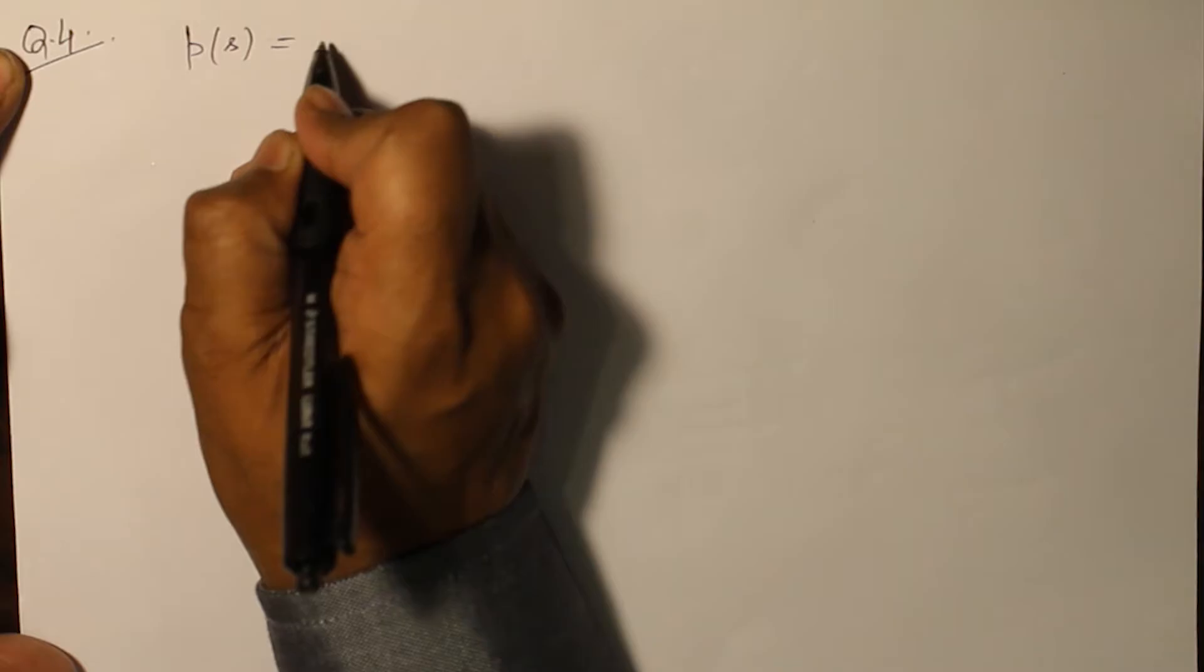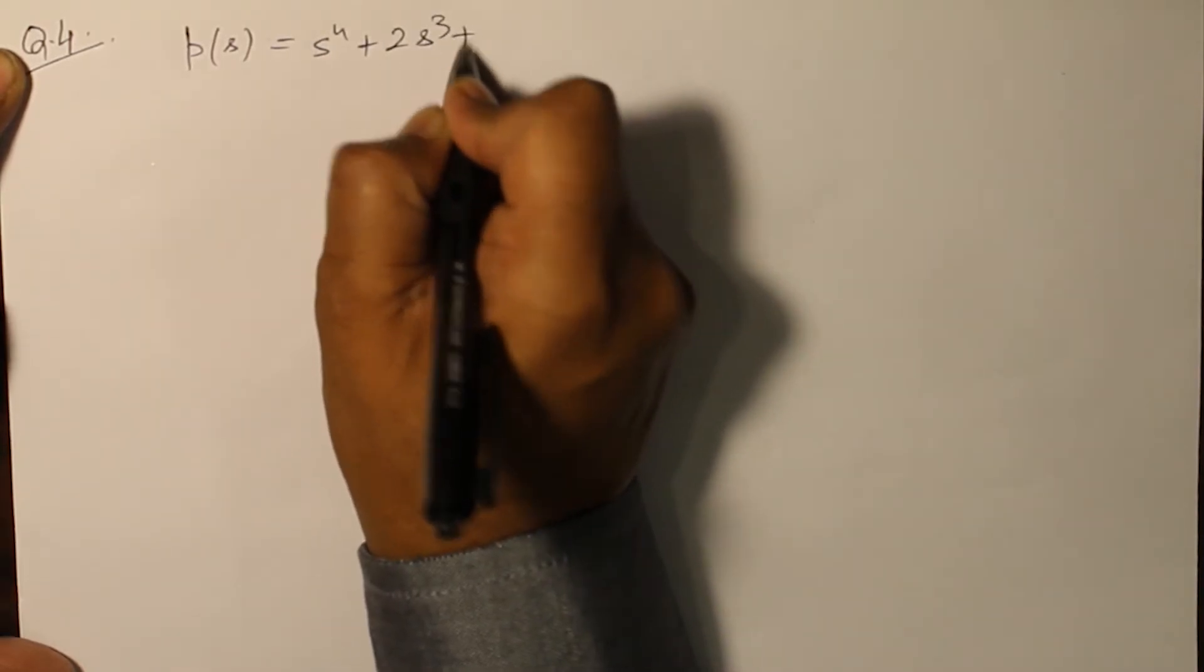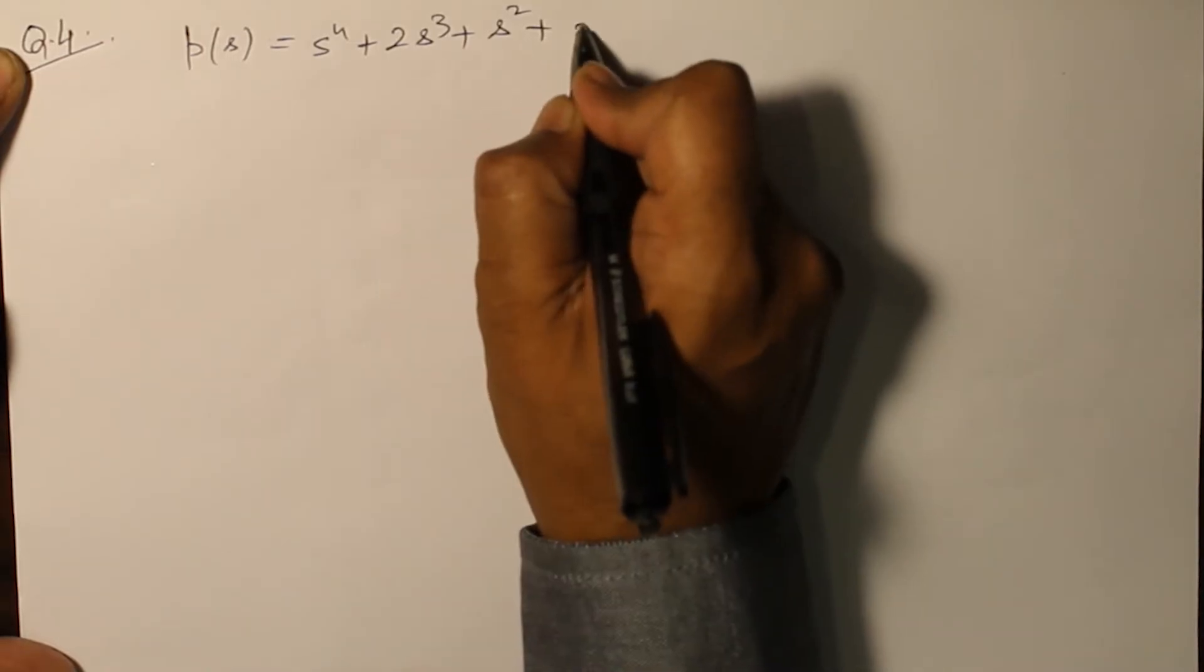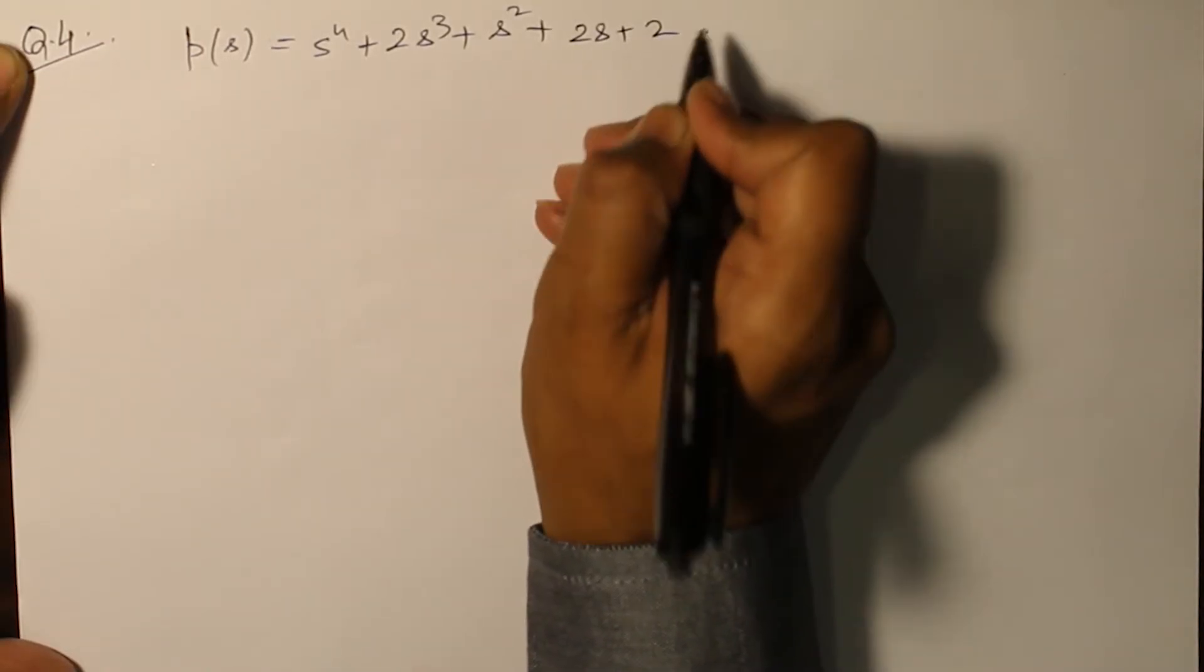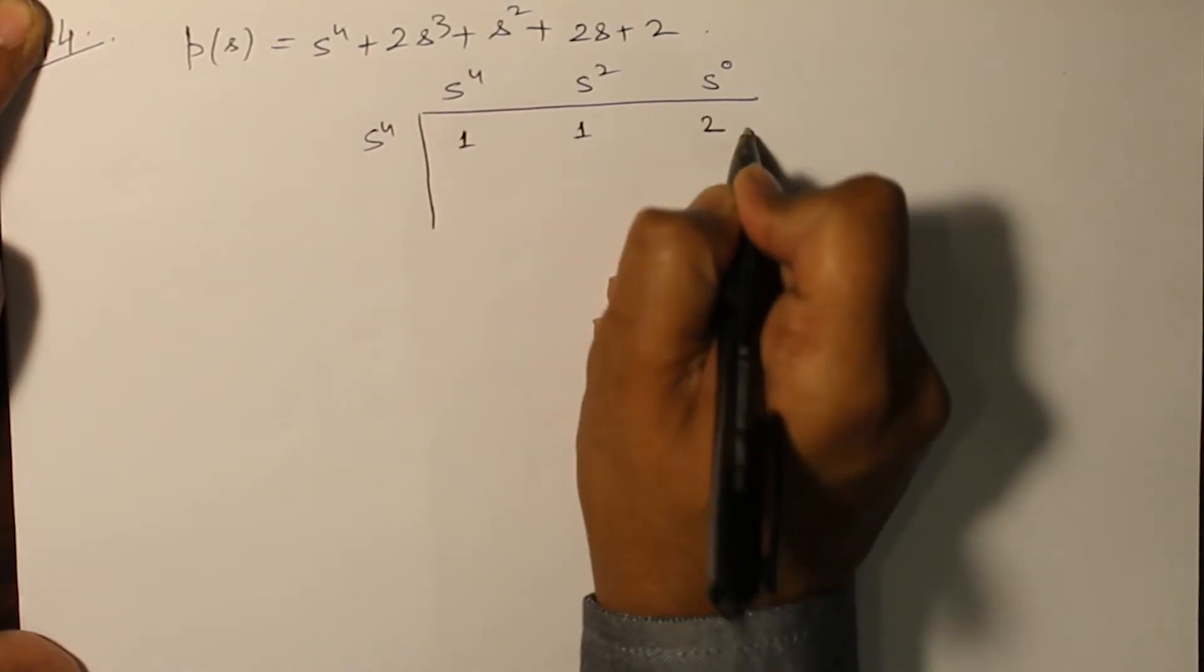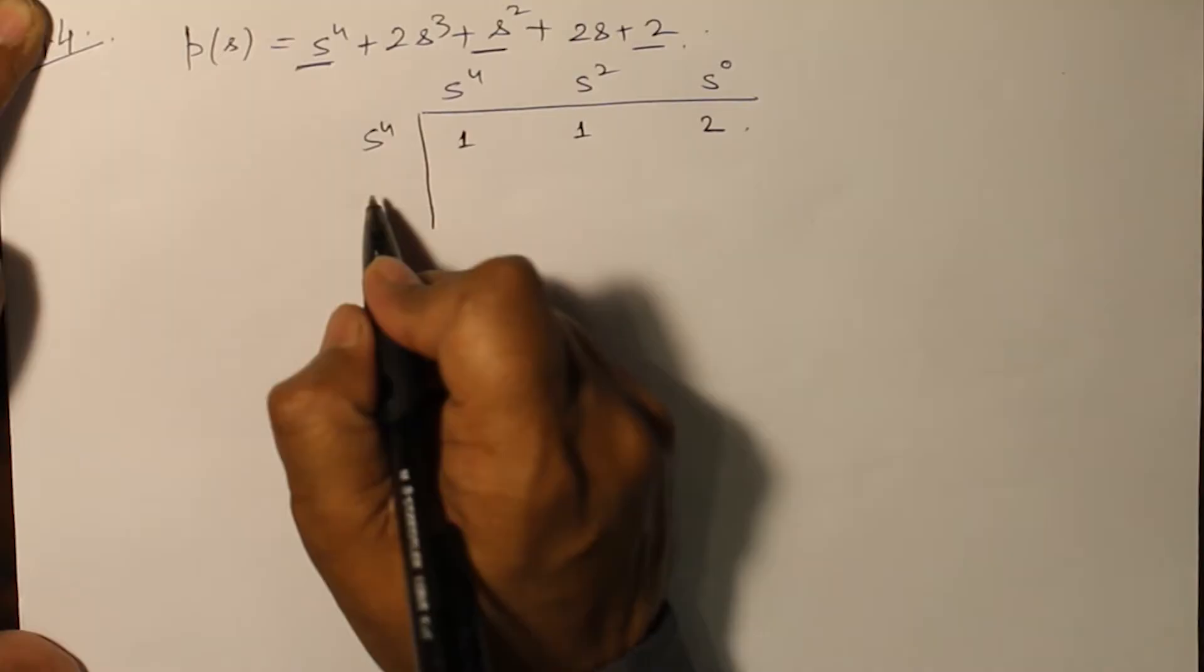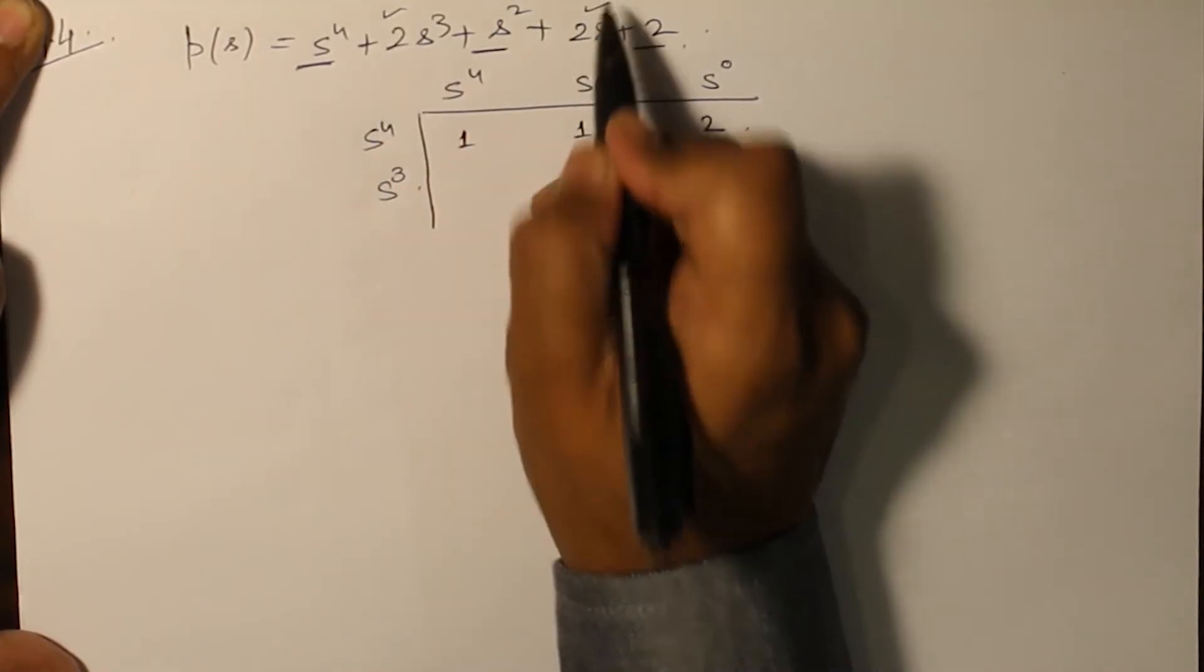We have to test the Hurwitz of this polynomial: s^4 plus 2s^3 plus s^2 plus 2s plus 2. Writing the coefficients: 1, 1, 2 and 1, 1, 2 and 2, 2.